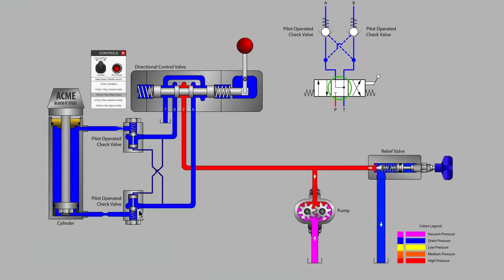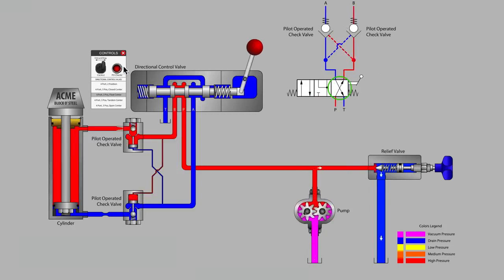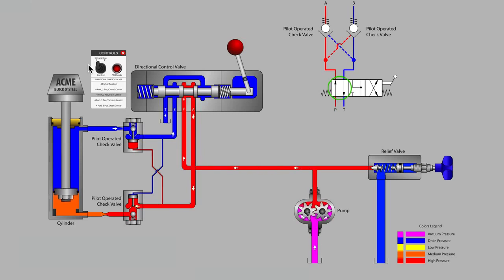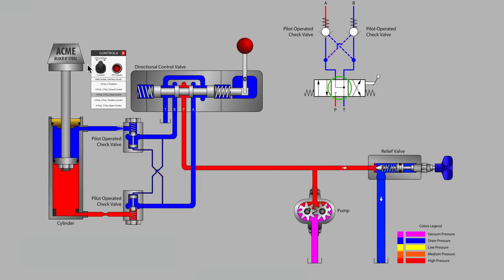Ball and seat style or poppet and seat style check valves are usually considered a much more reliable leak-free valve as the main components of such a valve do not wear against each other. The float center valve in this case is most desirable to make sure that the pilot lines are completely vented to tank to allow the springs inside the check valves to close the check valves completely and hold the cylinder mid-stroke.